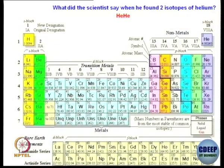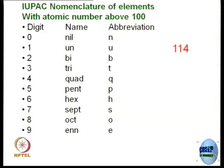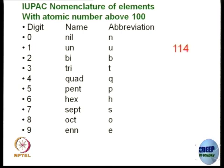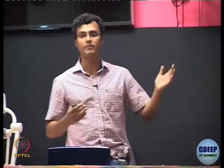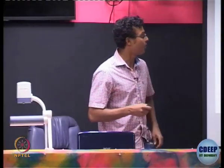Let us look at the nomenclature of unknown entities — unknown atoms. A lot of new elements are being discovered. If an element with atomic number 114 is discovered, what will be the nomenclature? The nomenclature for earlier elements is already done, so we do not have to worry about hydrogen, helium, lithium, beryllium, carbon, nitrogen, and so on. But if a new element with an atomic number greater than 100 — say 105 — is discovered, what would be the IUPAC way to name it?